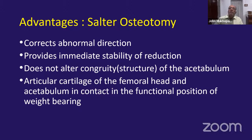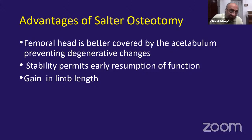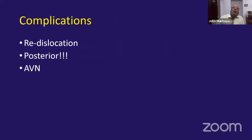Additional advantages include better femoral head coverage preventing degenerative changes, early resumption of function, and some limb length gain — valuable if combined with a femoral varus derotation osteotomy in older children where limb length is lost on the femoral side. Complications include re-dislocation — remember it does not provide good posterior coverage, so pathologies where posterior coverage is more deficient are less suitable — and avascular necrosis, as with almost any operation in this area.